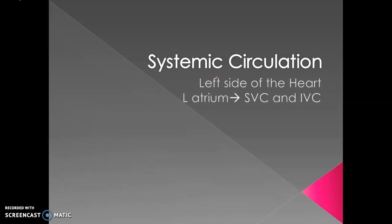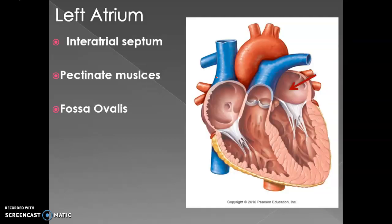Systemic circulation is the movement of blood from the left side of the heart to different parts of the body and back to the right side. Starting with the left atrium: we can see the interatrial septum, which is the partition between the left atrium and the right atrium. The general muscles are pectinate muscles, and we also see the fossa ovalis — the depression is visible, though not very clearly from this angle. This will be covered more in the next chapter.